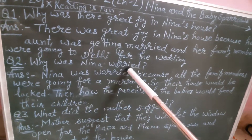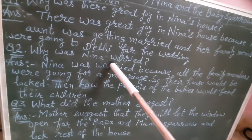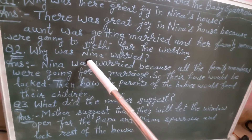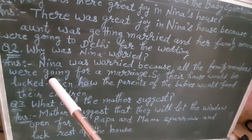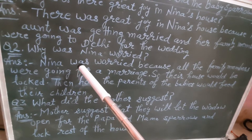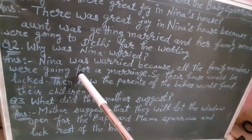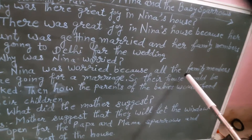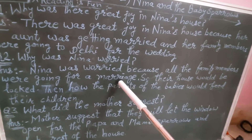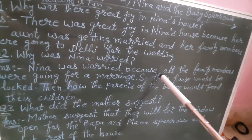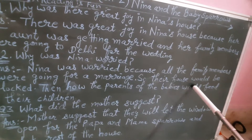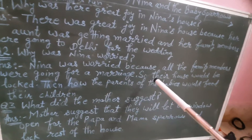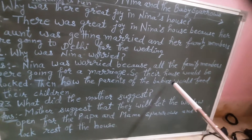Why was Nina worried? Nina kis baat se chintit thi? Answer: Nina was worried because all the family members were going for a marriage. Nina chintit thi kyunki sabhi family members ek shaadi ke liye ja rahe the.